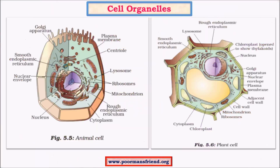Cell is the fundamental unit of life and there are mainly two kinds of cells. One is animal cell, the other one is plant cell. The individual cell organelles are the ones which are responsible for various specific functions performed by both plant cell as well as animal cell.